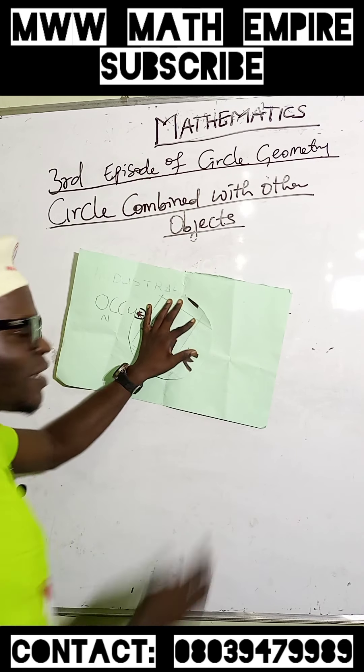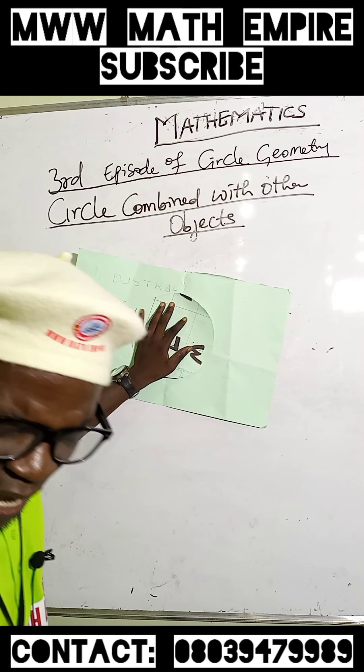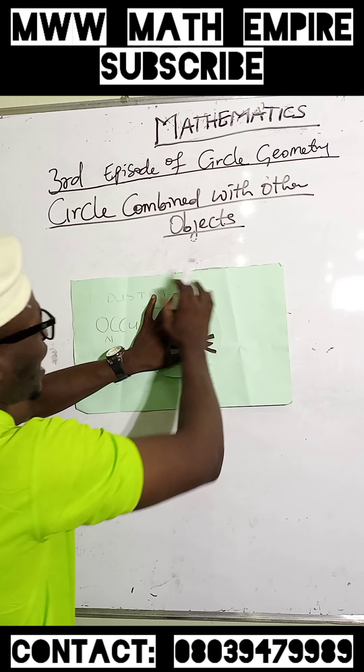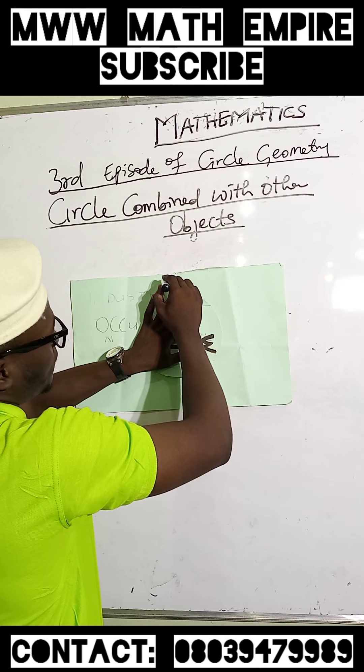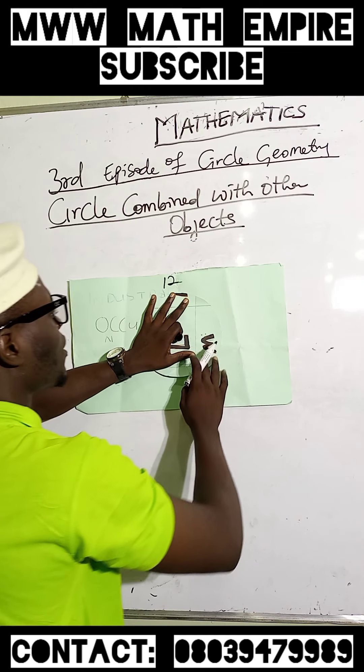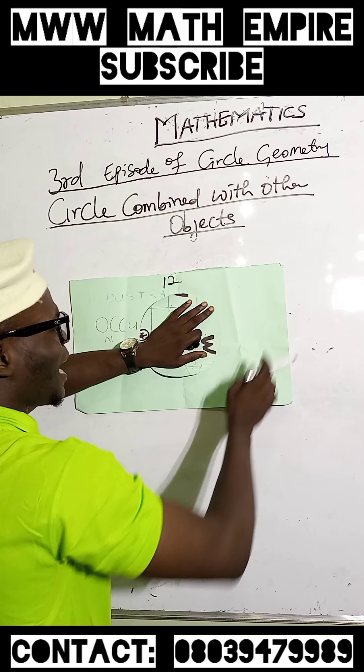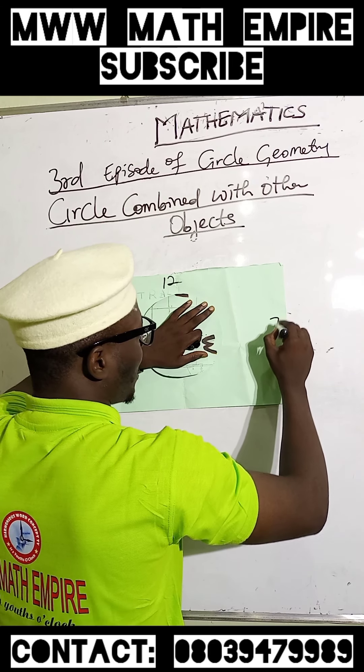This is a circle combined with a rectangle. The rectangle has dimensions - let me take this as 12 for the base and the height as 7.